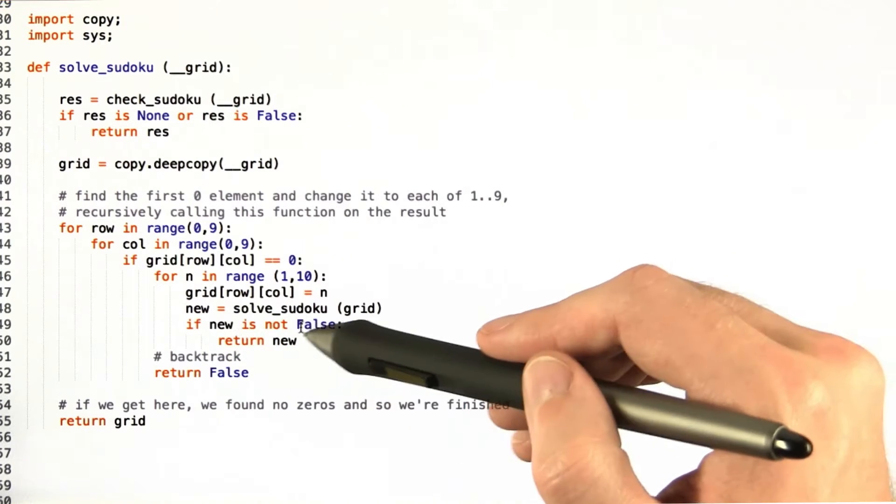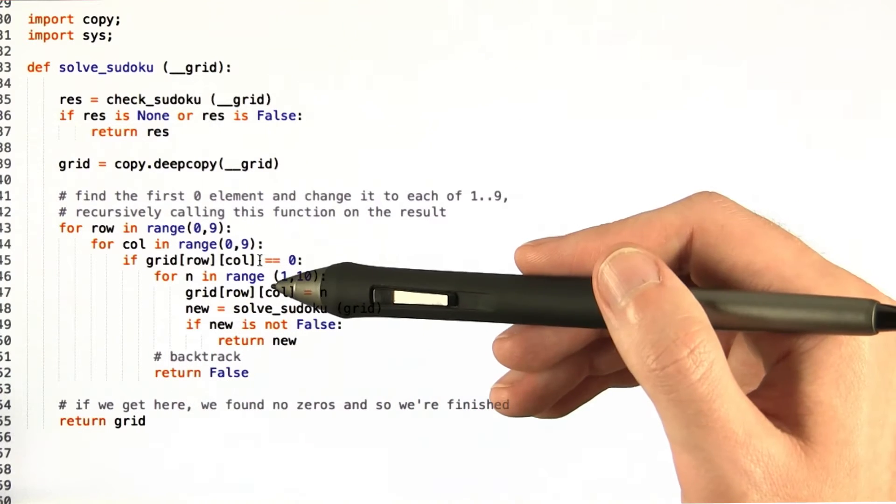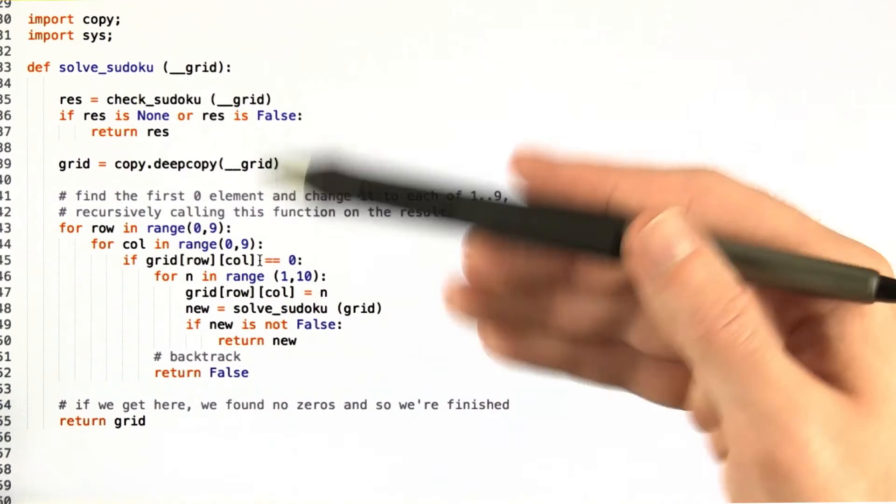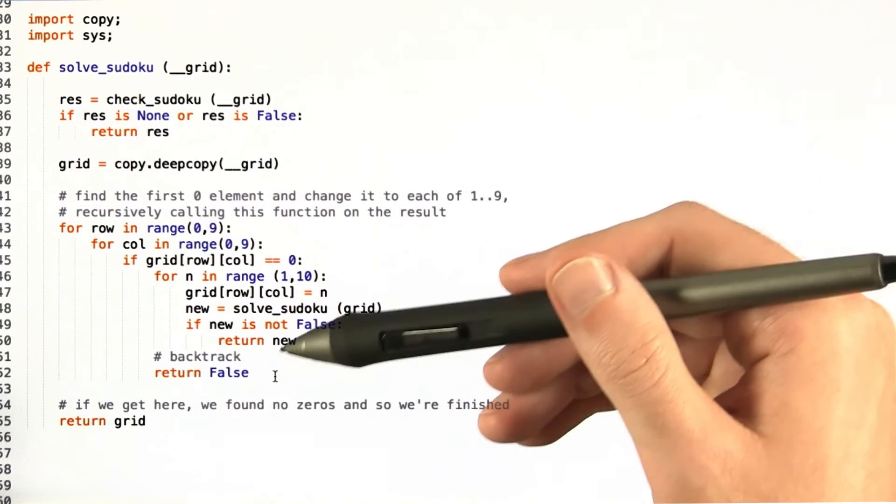If this new grid isn't false then we return it, otherwise we backtrack and that's it. That's all there is to that. It's really pretty simple.